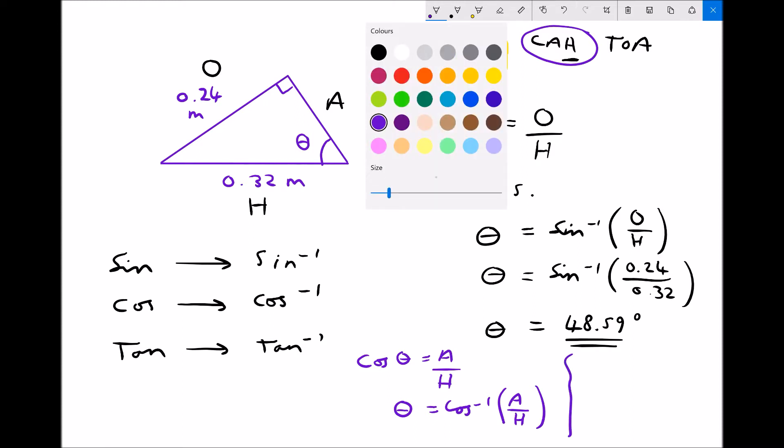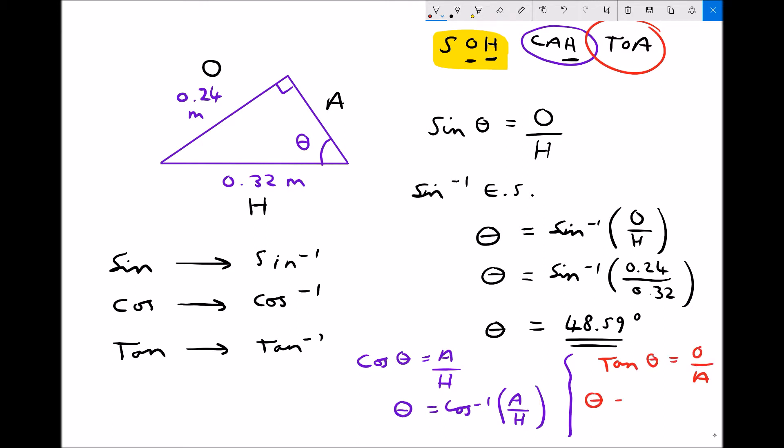And if we were to use tan theta or TOA, well, if tan theta equals opposite over adjacent, then theta just equals tan to the minus 1 of opposite over adjacent.